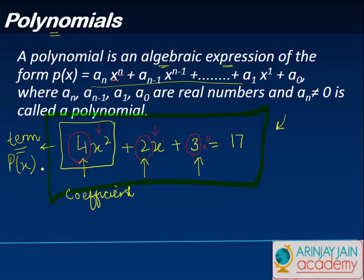So I can very well say that this is p(x) is equal to 4x squared plus 2x, and if you move this over here it becomes minus 14, wherein you have aₙ, aₙ₋₁ - these are nothing but the coefficients. All these terms which are represented by aₙ over here are the coefficients, and then you have x to the power n, x to the power n minus 1, and x to the power 1.